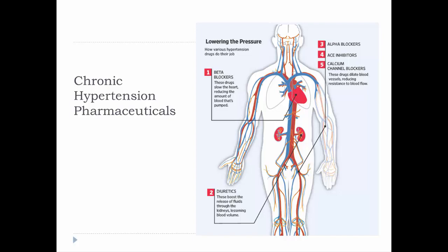Alpha blockers block alpha adrenergic receptors, which normally cause vasoconstriction. By blocking those, we get vasodilation, reducing peripheral resistance, which means blood pressure goes down. ACE inhibitors block the enzyme that converts angiotensin 1 into angiotensin 2, so there is less angiotensin 2. Since angiotensin 2 is responsible for increasing blood pressure, having less of it results in lower blood pressure.